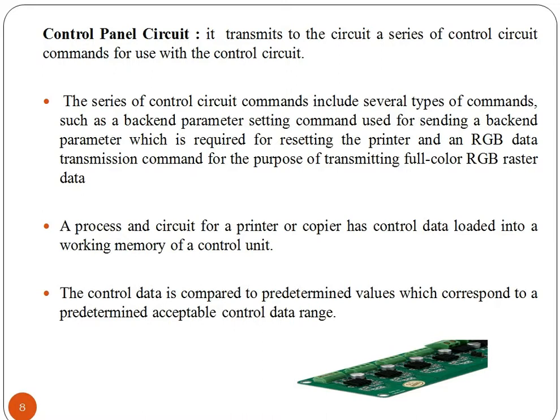The control panel circuit transfers a series of control circuit commands for use with the control circuit. These commands include several types, such as a backend parameter setting command used for resetting the printer, and an RGB data transmission command for transmitting full-color RGB register data. A process and circuit for a printer or copier has control data loaded into a working memory of a control unit, where the control data is compared to predetermined values corresponding to a predetermined exit control data range.